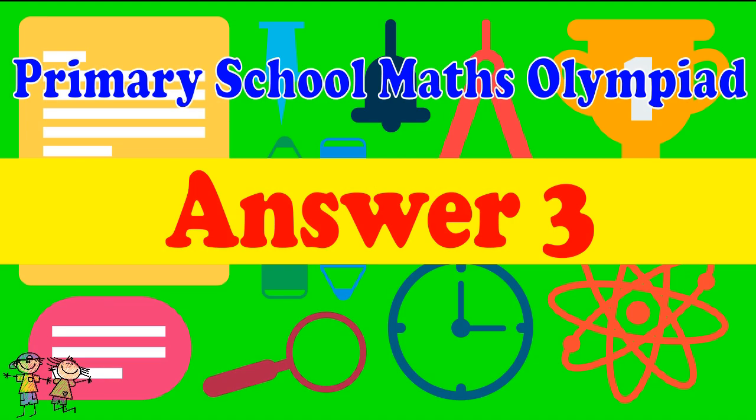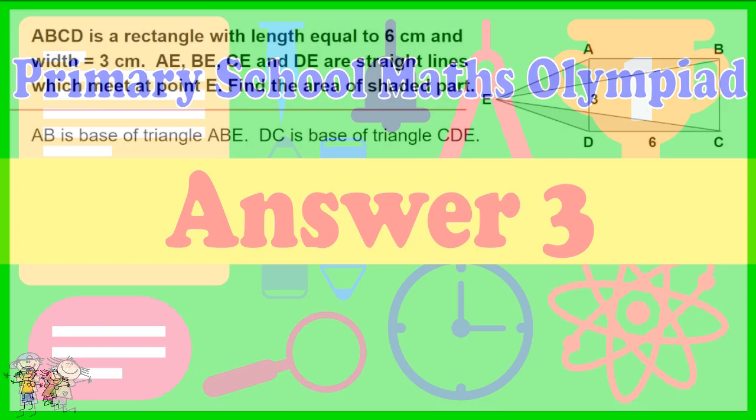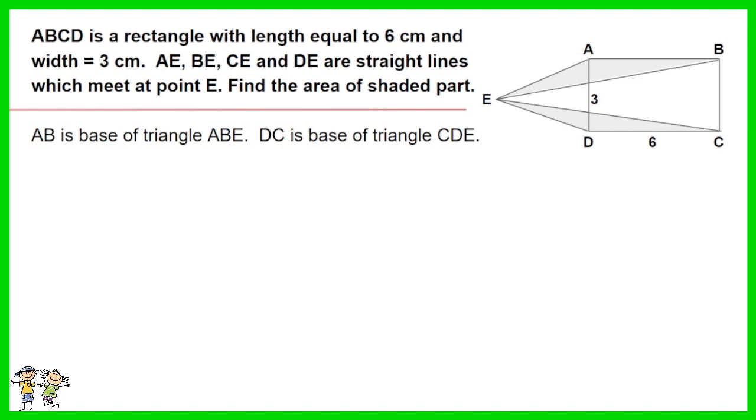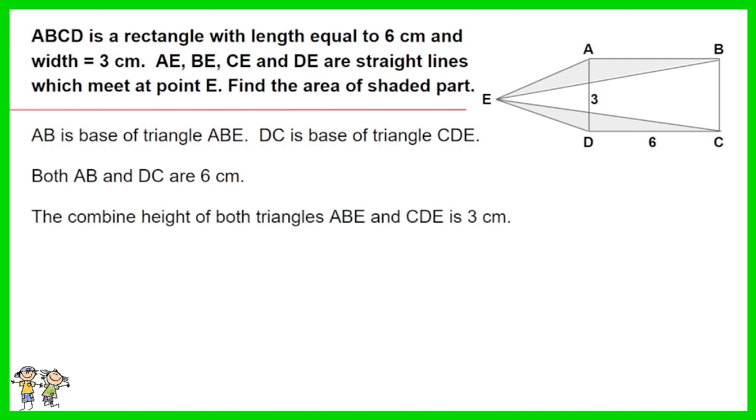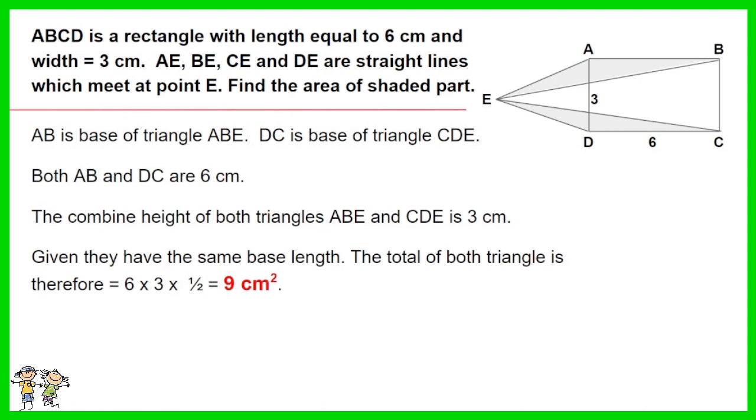Answer for question 3. AB is the base of triangle ABE. DC is base of triangle CDE. Both AB and DC are 6 cm. The combined height of both triangles ABE and CDE is 3 cm. Given they have the same base length, the total of both triangles is therefore equals 6 times 3 times half. The answer is 9 cm squared.